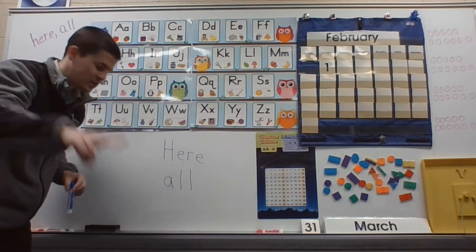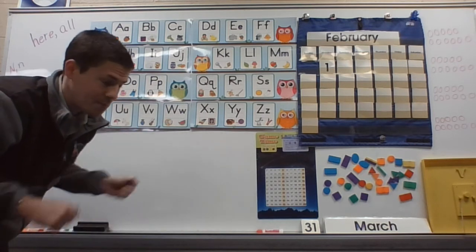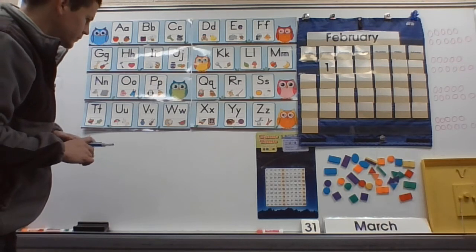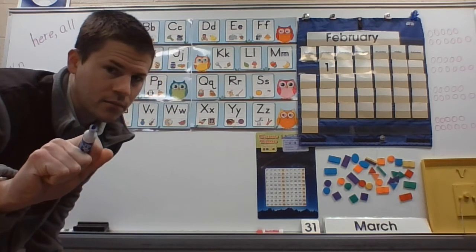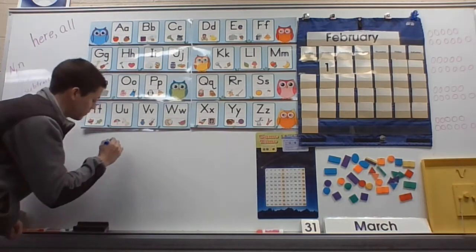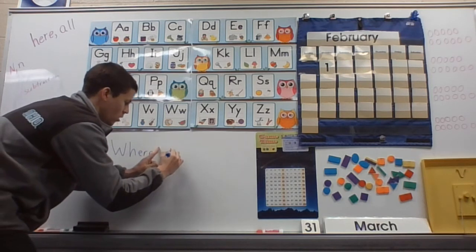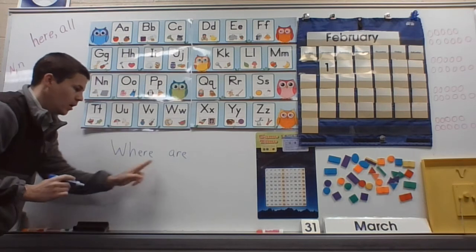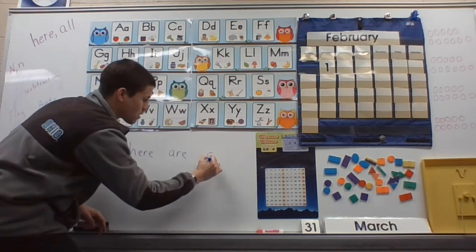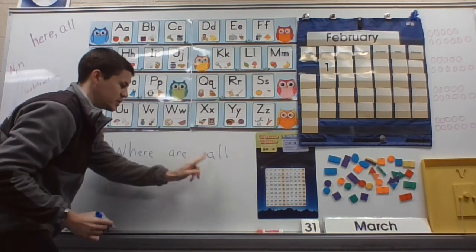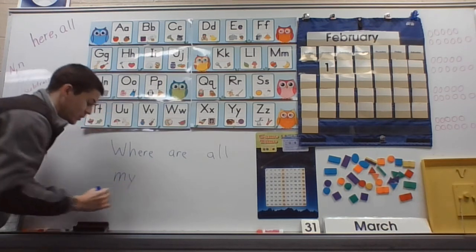We're going to write two sentences. If your marker board's big enough, maybe you can write it with me. All right. What does this sentence start with? The first letter. Uppercase. Where. Where. Are. Where are all. Remember how to spell all? Where are all. Look at my finger space. Where are all. My. Do you remember that sight word?